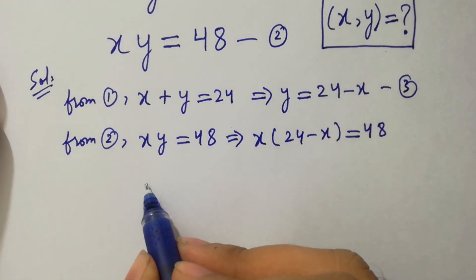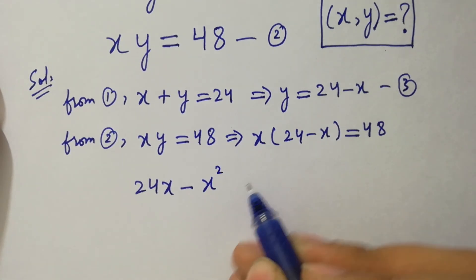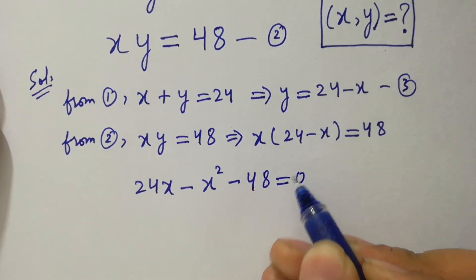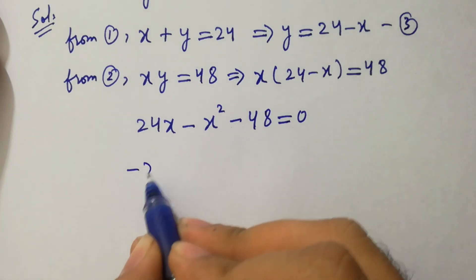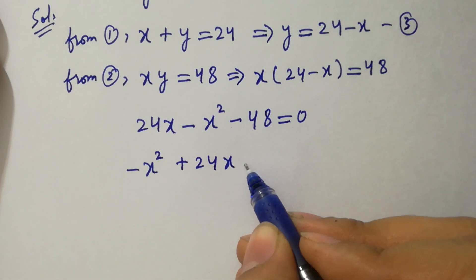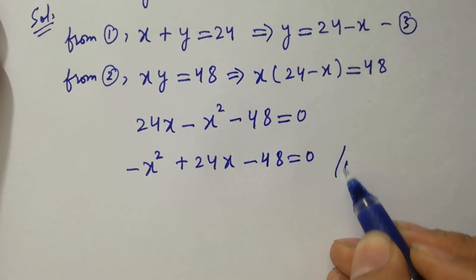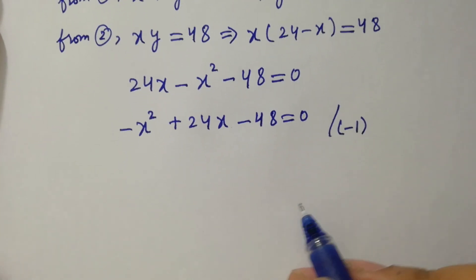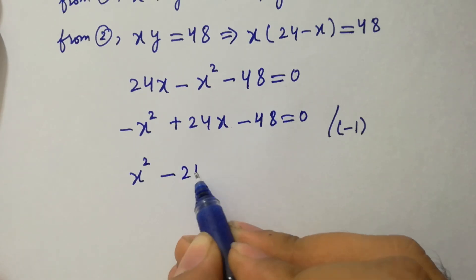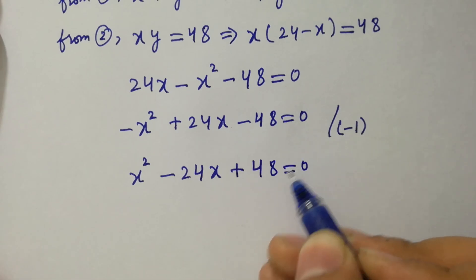Expanding: 24x minus x squared equals 48, so minus x squared plus 24x minus 48 equals 0. Divide both sides by minus 1.